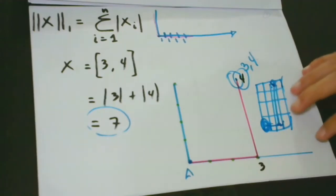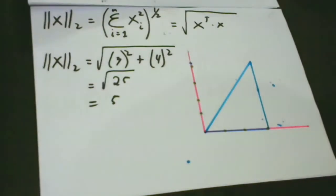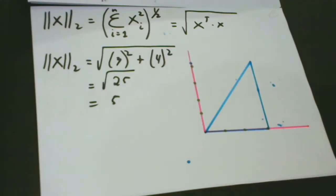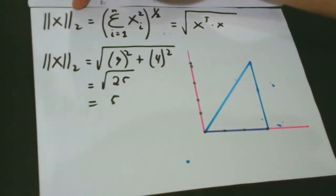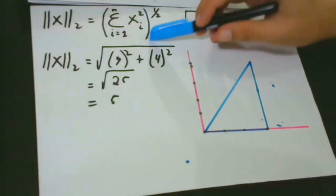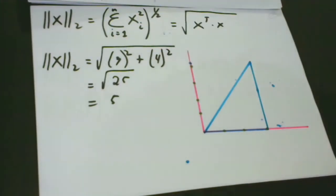Now let's go to the next one, which is more interesting — this is what we call L2, also called the Euclidean norm. It is the shortest distance to travel from one point to another. While in L1 we don't consider shortcuts, in L2 we do. It is used frequently in machine learning and deep learning, and is simply denoted as ‖x‖ with subscript 2, which is sometimes omitted.